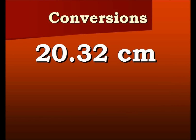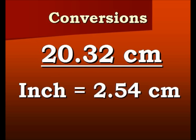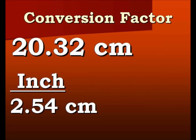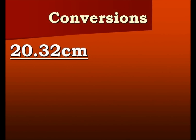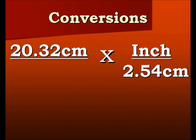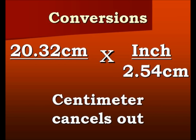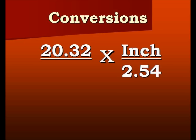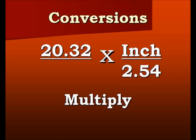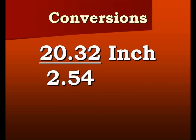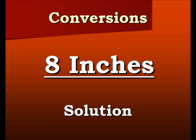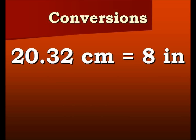Again we have the problem here. We're going to set it up by introducing our conversion factor, turn it into a fraction, and multiply it into our given. The inches are now on top because that's what we're converting to. The centimeters cancel out. We multiply those inches over and divide by 2.54. So 20.32 centimeters equals 8 inches.